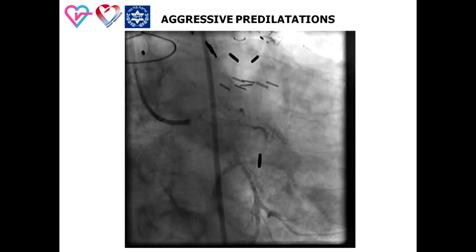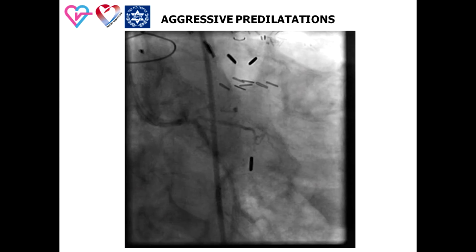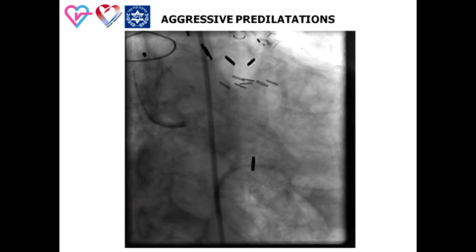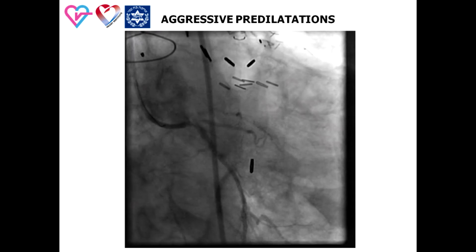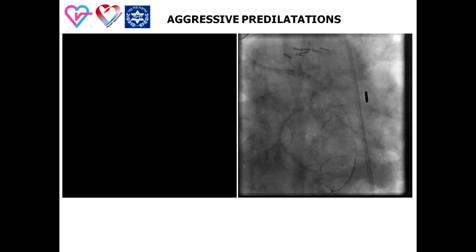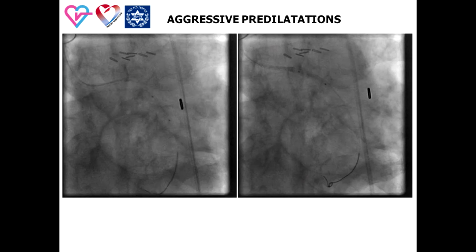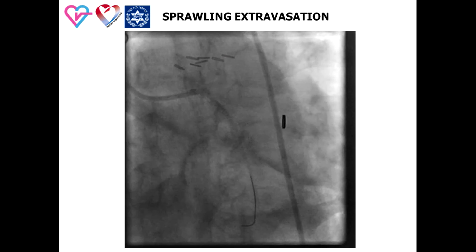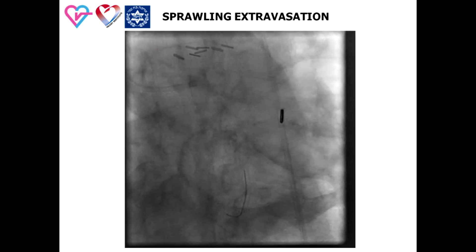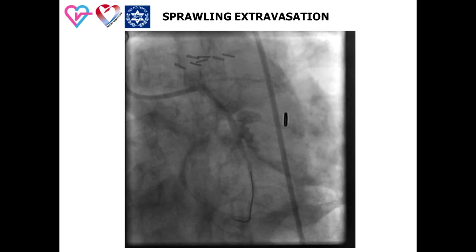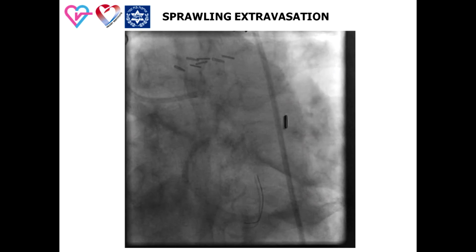This is a case of a patient with evidence of inferoposterior ischemia as a result of a failed saphenous vein graft to a large marginal artery. Aggressive lesion preparation with an oversized balloon was performed. Sprawling intramural extravasation with pericardial spilling led to a large area of ischemia and hemodynamic changes.